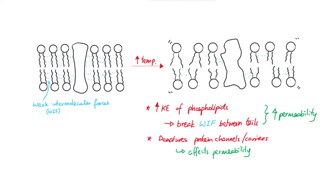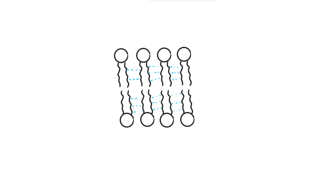Now let's look at the second factor: solvents. As a quick reminder, the phosphate head is hydrophilic, meaning it can interact with water molecules which fill the cytoplasm and aqueous environment. In the middle of the bilayer are the hydrophobic fatty acid areas, which are non-polar and don't interact with water, so the fatty acid tails are shielded away from the aqueous environment. However, non-polar solvents can actually interact with the fatty acid tails and disrupt the membrane.